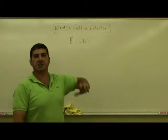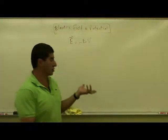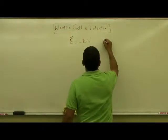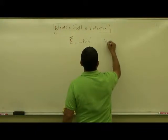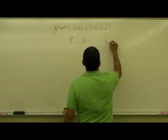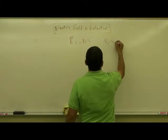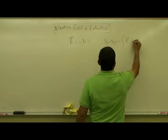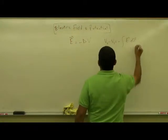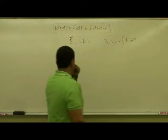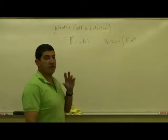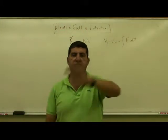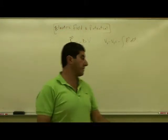The electric potential is negative the integral of the electric field. So we have V2 minus V1 equal to negative the integral of E dot dr. If the electric potential is given to us, how can we derive the electric field from there?